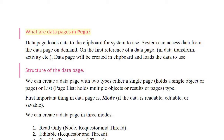What are data pages in PEGA? A data page loads data to the clipboard for the system to use. The system can access data from the data page on demand. On the first reference of a data page — in a data transform, activity, etc. — the data page will be created in the clipboard and the data will be loaded for use.